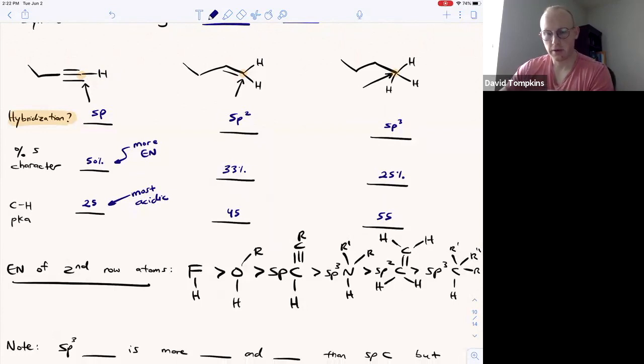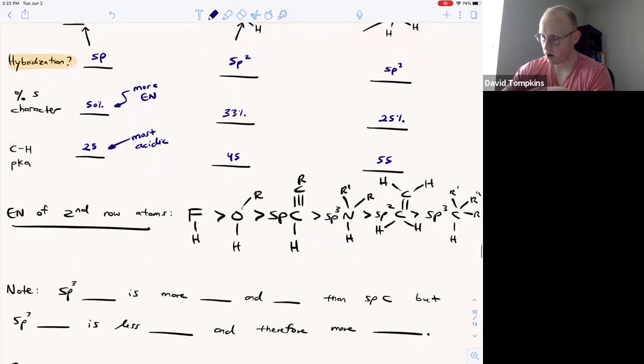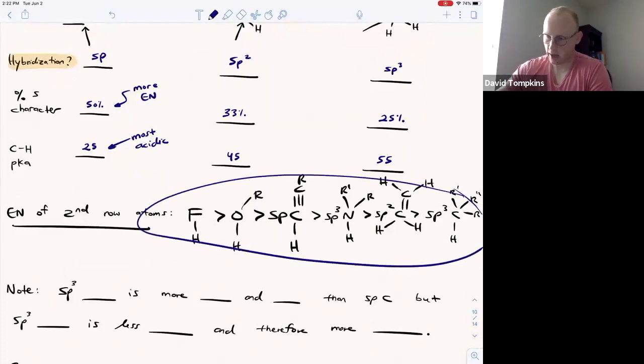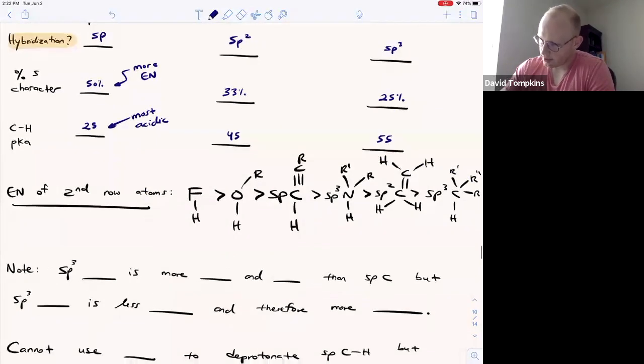it's not as simple as a periodic trend anymore. If the hybridizations are changing between the atoms being compared, then you must know the following electronegativity of second row atoms. And I'm just going to want you to memorize this scale here, where sp3 fluorine is more electronegative than oxygen, and it's safe to say that oxygen is always more electronegative than carbon. But generally, it goes oxygen than nitrogen. However, we see that because sp carbon has that 50% s character, whereas sp3 nitrogen only has 25% s character, sp carbon is actually more electronegative.